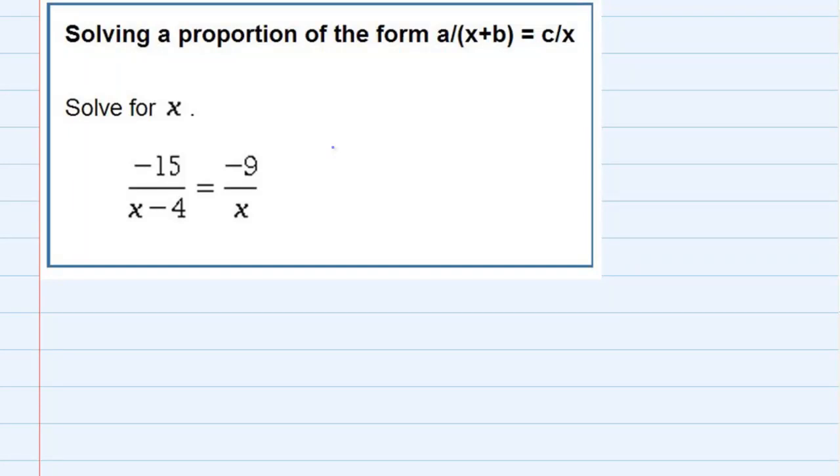Solving a proportion of the form a over x plus b equals c over x. We're asked to solve for x, and we do have a proportion here, which means we have a fraction on one side and a fraction on the other side.